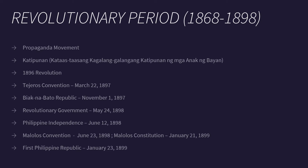The revolutionary period is from 1868 to 1898. The Propaganda Movement was started by the ilustrados, led by Jose Rizal, Graciano Lopez Jaena, and Marcelo H. del Pilar. They fought for reforms in Spanish rule and for equality of the Filipinos and representation in the Spanish Congress. The Katipunan, or Kataas-taasang Kagalang-galangang Katipunan ng mga Anak ng Bayan, was started by Andres Bonifacio and fought for the independence of the Philippine nation.